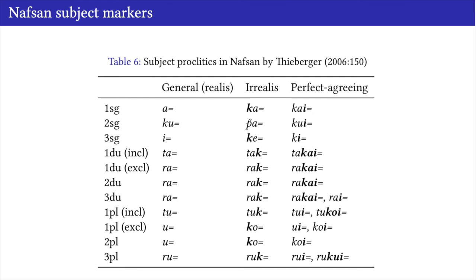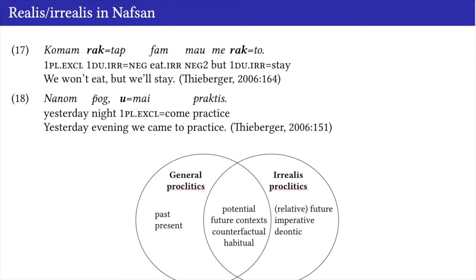Here again are the subject proclitics: the general paradigm, irrealis, and perfect-agreeing. Although these proclitics might look compositional at first glance, it is hard to synchronically achieve a meaningful morphological separation of elements denoting irrealis. For instance, we have 'a' then 'k,' but in other persons we have 'ta' and 'tak,' and in the second person singular it's 'pa'—there's no real good way of separating them. I regard them as synchronically non-compositional and morphologically in competition, which is relevant for the competition between general and irrealis proclitics I will discuss.